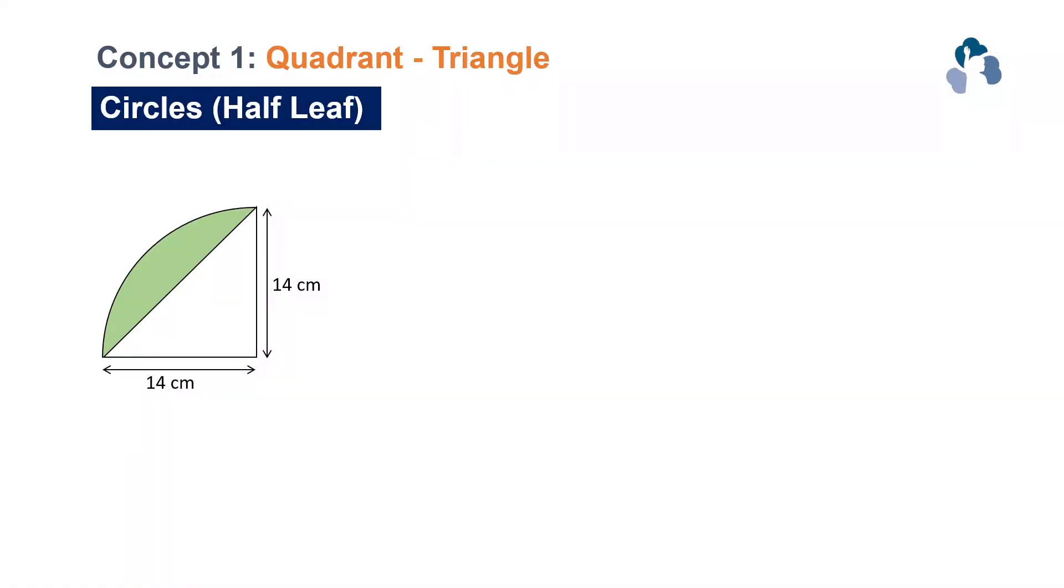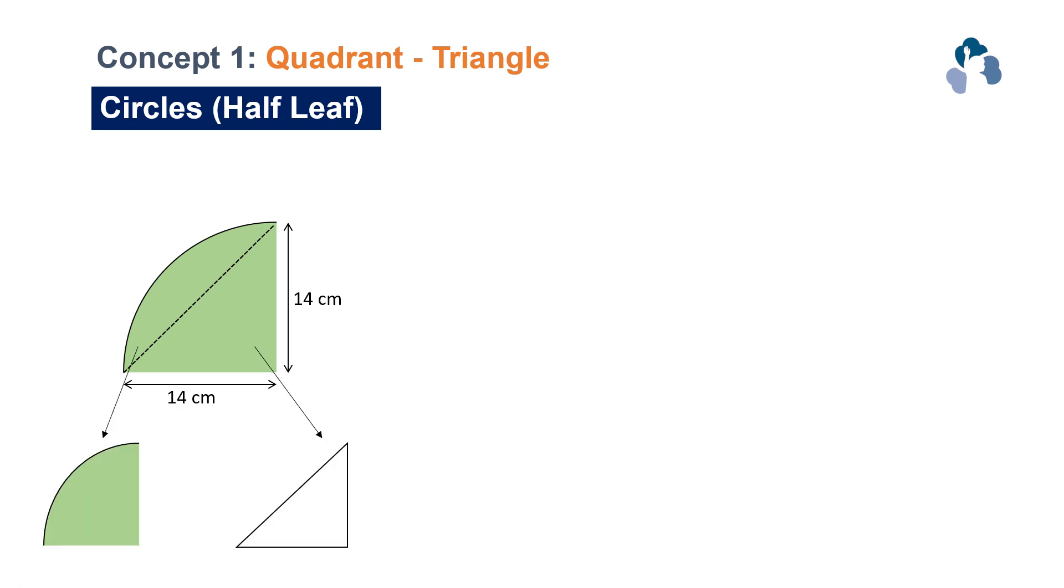Let's take a look at one of the most basic circles questions. What you see in this diagram here is actually a quadrant and it is also made up of simple shapes that's overlapping. Let's break up the shapes and you will see that there's a triangle overlapping the quadrant.